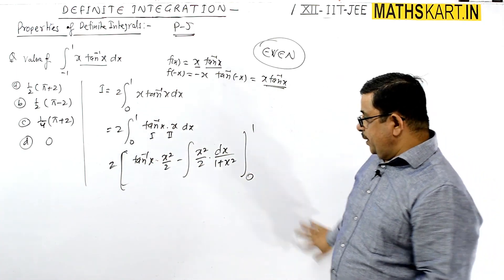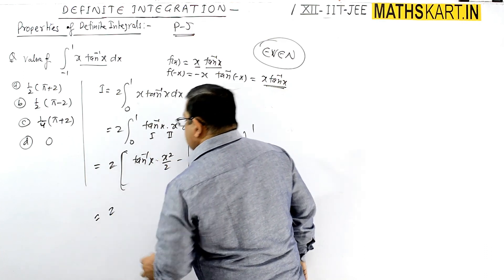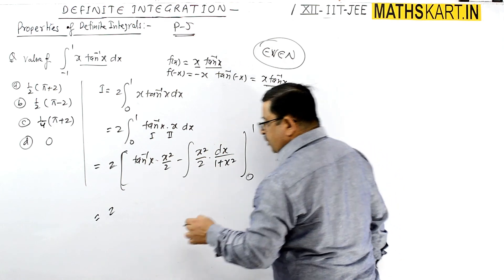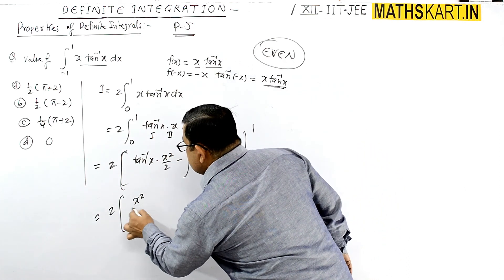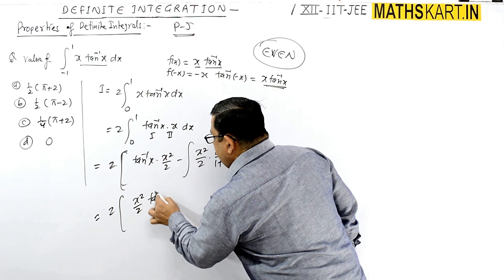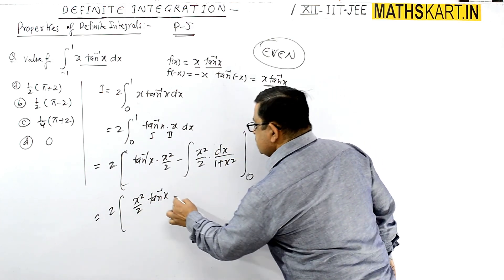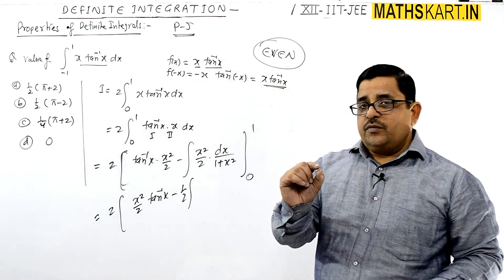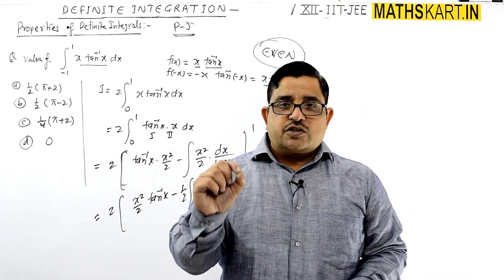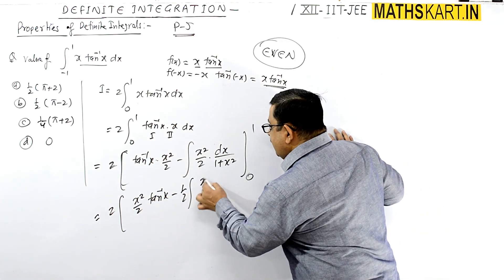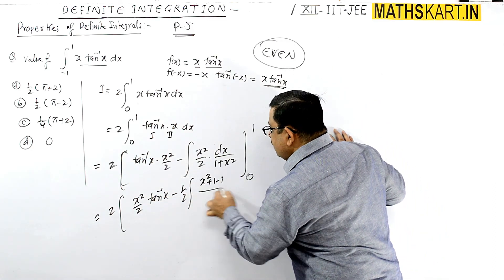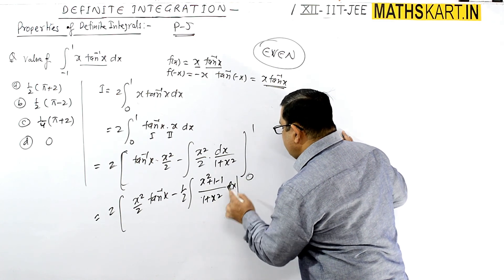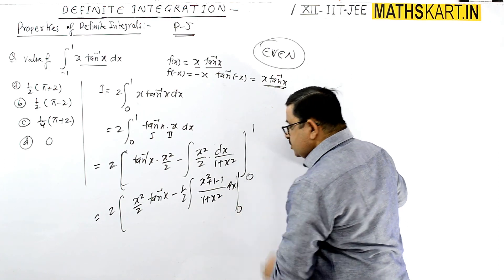Placing limits from 0 to 1, this is two times: x²/2 tan inverse x minus one-half integral of x² divided by (1+x²) dx. We can write x² as (x²+1-1) divided by (1+x²) with limits 0 to 1.